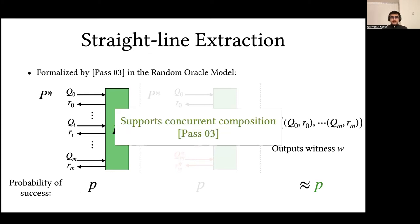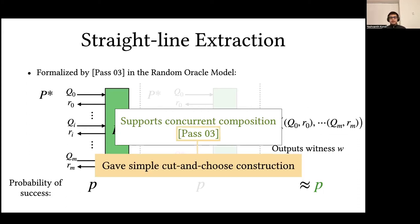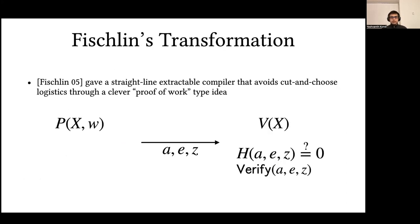Pass showed that this sort of extraction strategy is amenable to concurrent composition, and in the same paper he gave a simple cut-and-choose construction to achieve straight-line extraction. Fischlin, in a subsequent work, gave a straight-line extractable compiler that avoided the cut-and-choose logistics of Pass through a clever proof-of-work type idea.